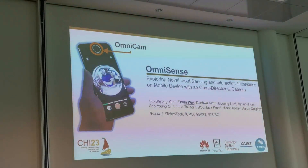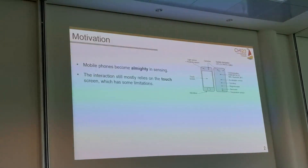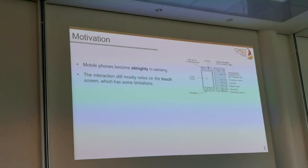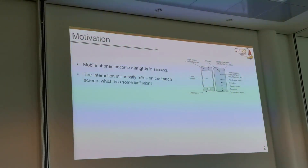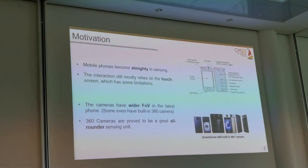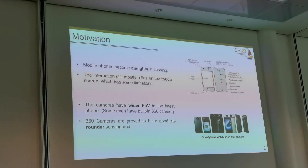Speaking of Omni-T, this is also related to the topic for today. As we may know, in recent years, mobile phones are becoming an all-around sensing device. They can not only be used by the user, but can also perform interaction with users through all these sensors. However, current interaction still mostly relies on the touchscreen, which has some downsides such as small hands or fat fingers. Also, it only supports mostly 2D inputs.